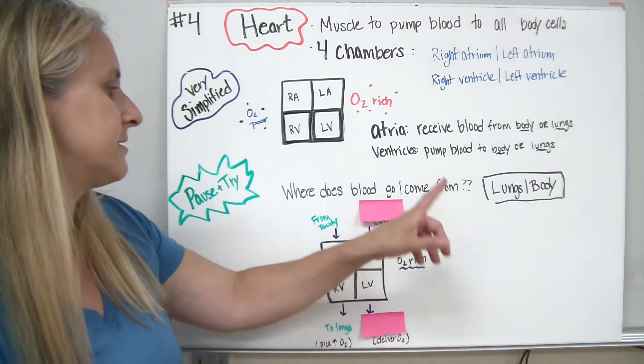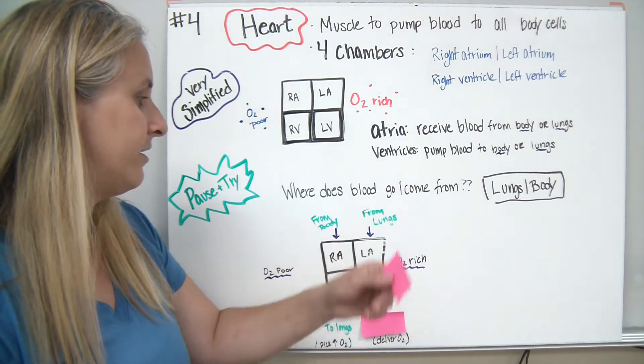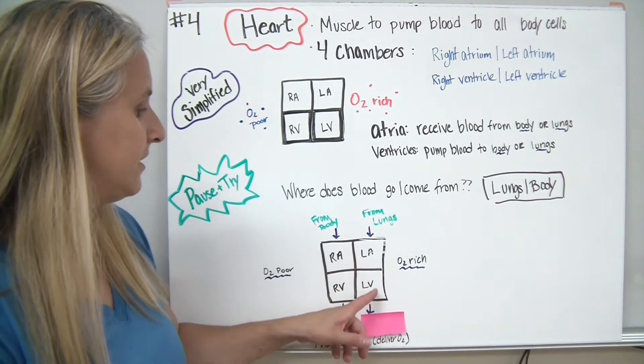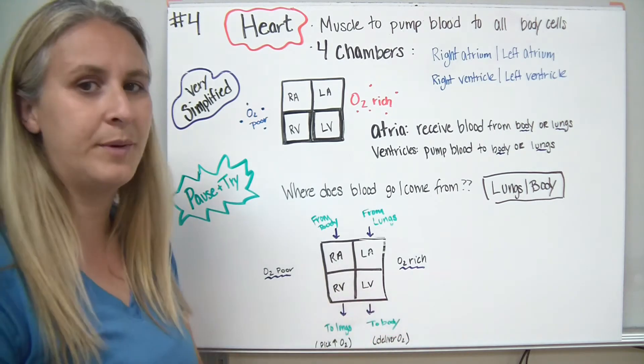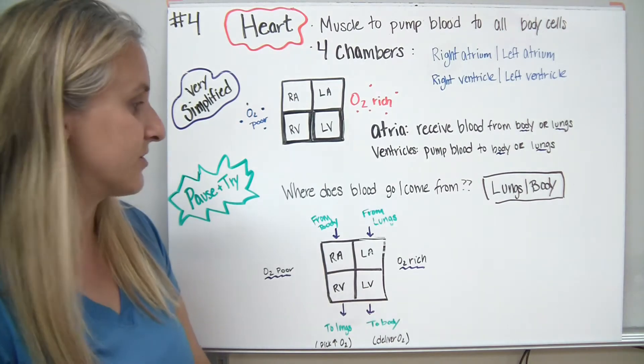It's going to go to the lungs, and it's going to pick up the oxygen, and it's going to come back to the left side of the heart from the lungs into the left atrium, which receives, pumped down into the left ventricle, which is then going to pump it to the body. This now, remember, is rich in oxygen.